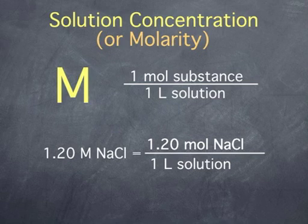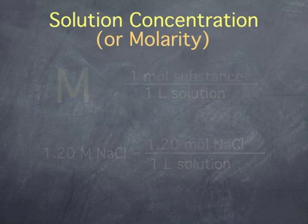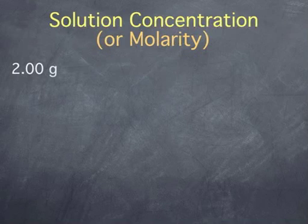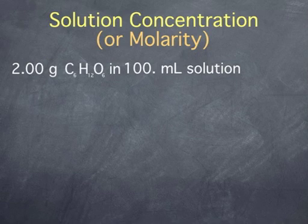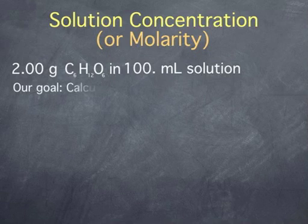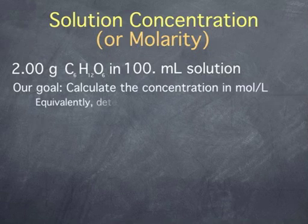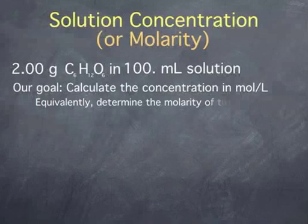Let's begin by calculating the concentration of a solution of glucose in water. Let's say we dissolve 2.00 grams of glucose in 100 milliliters of water. Glucose is a simple sugar with a molecular formula C6H12O6. Our goal is to calculate the concentration in moles per liter, or equivalently, to determine the molarity of the solution.